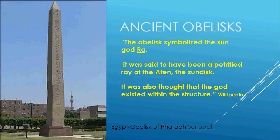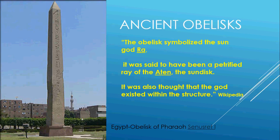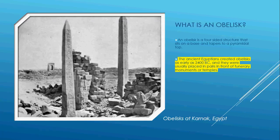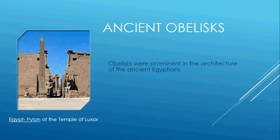The obelisk symbolizes the sun god Ra and it was said to be a petrified ray of the sun. It was thought that a god existed inside of it. So what is an obelisk? It's a four-sided structure with a little pyramid at the top, and it's been around since the Egyptians in 2400 BC.